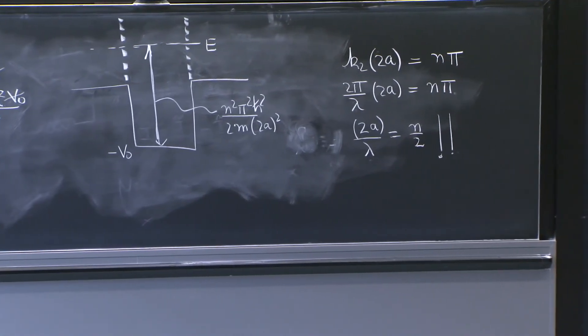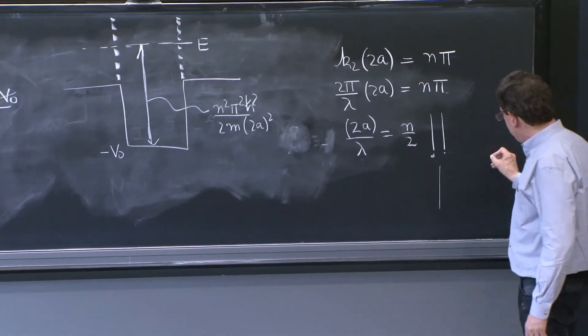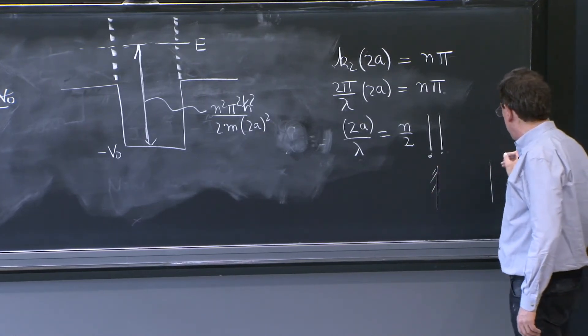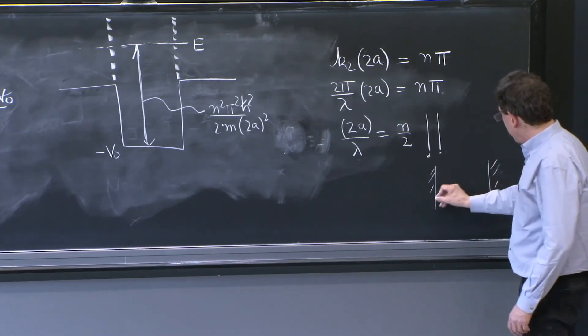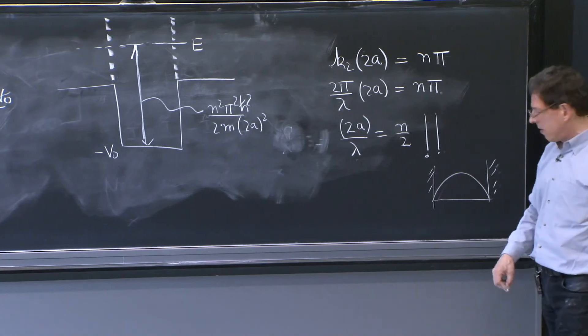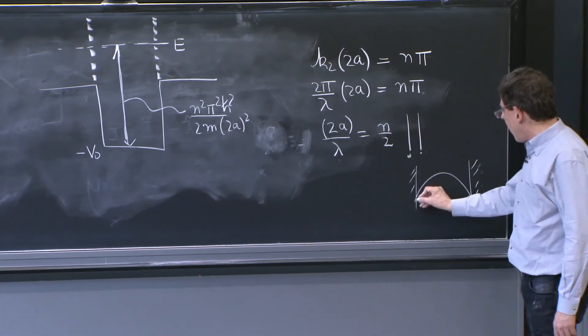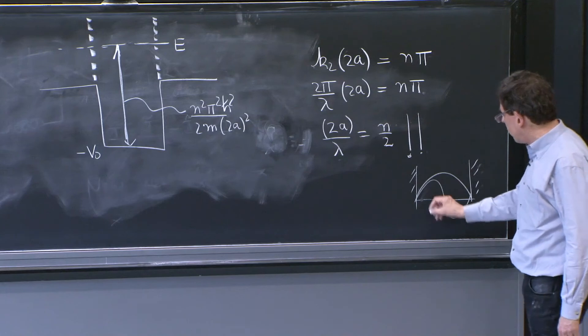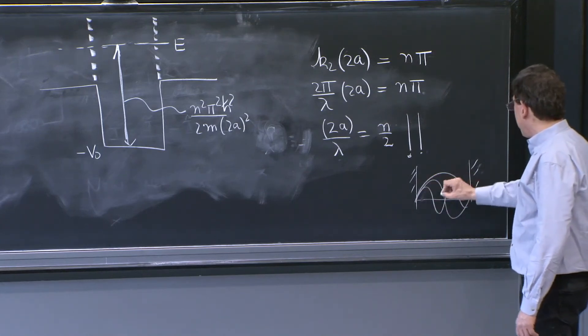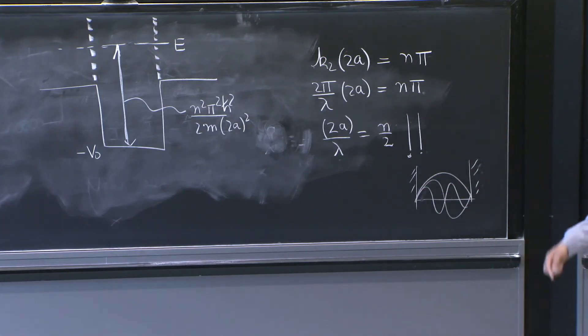The wavelength lambda fits into 2a a half integer number of times. And that's exactly what you have in an infinite square well. If you have a width, well, you could have half a wavelength there for n equal 1, a full thing for n equal 2, 3 halves for n equal 3. You always get half and halves and halves increasing and increasing all the time.